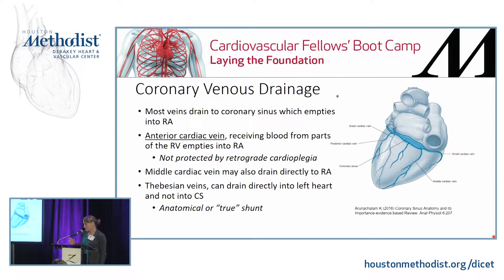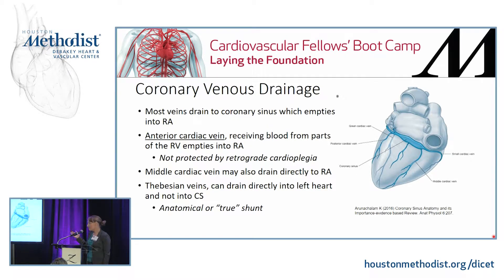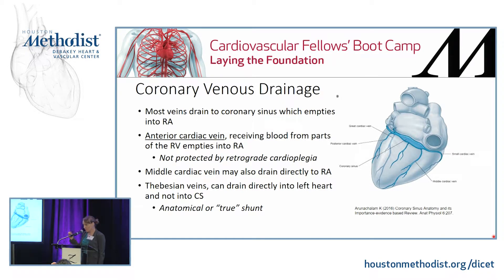A quick review of venous drainage: most coronary venous blood drains into the coronary sinus. The anterior cardiac vein drains directly into the right ventricle and then into the right atria. A retrograde catheter for cardioplegia would not protect that territory as purely as others, which is important to keep in mind when thinking about retrograde cardioplegia — this relates to the concept of true or anatomical shunt.